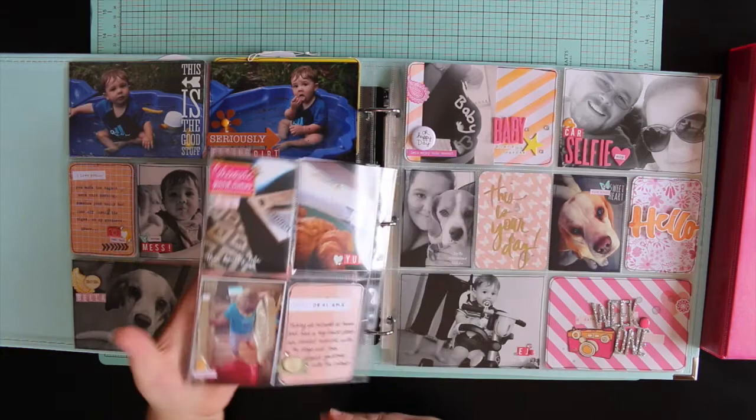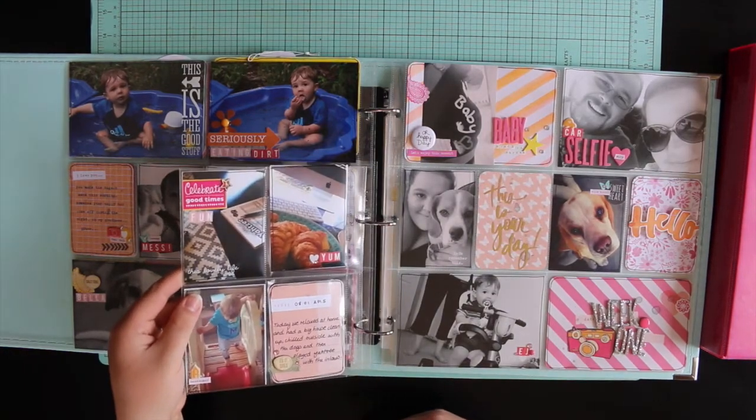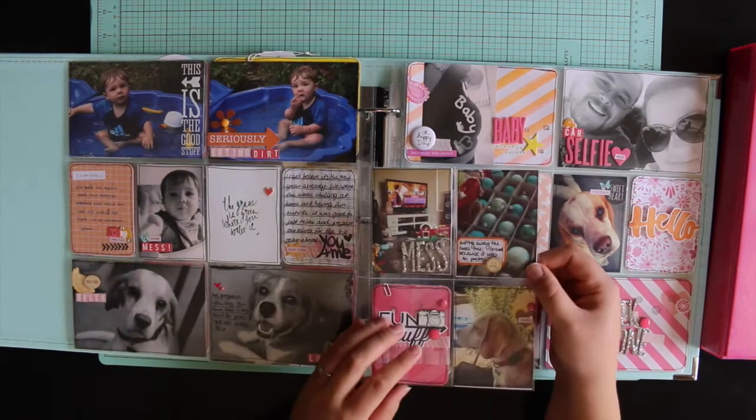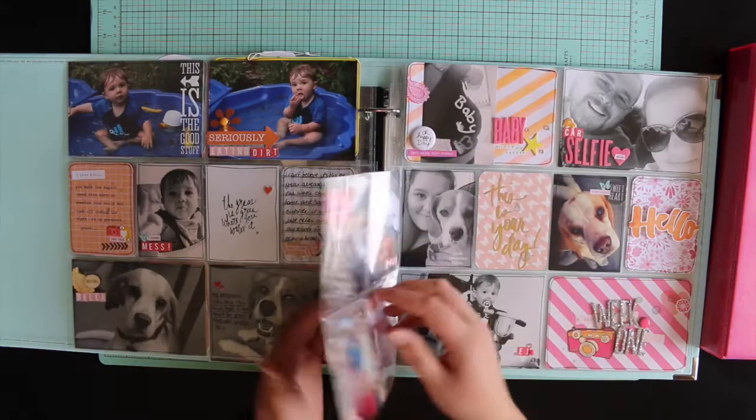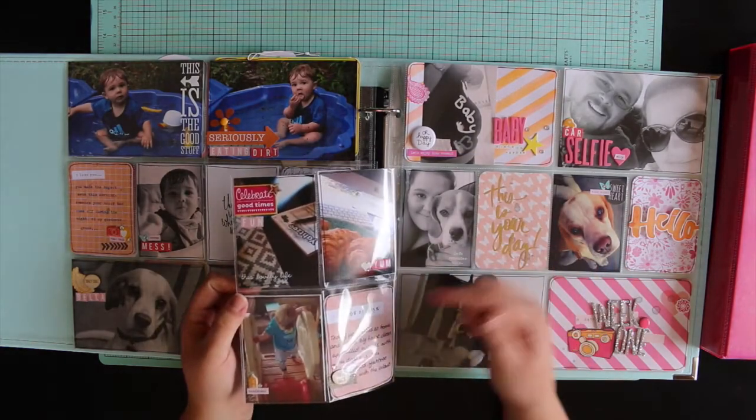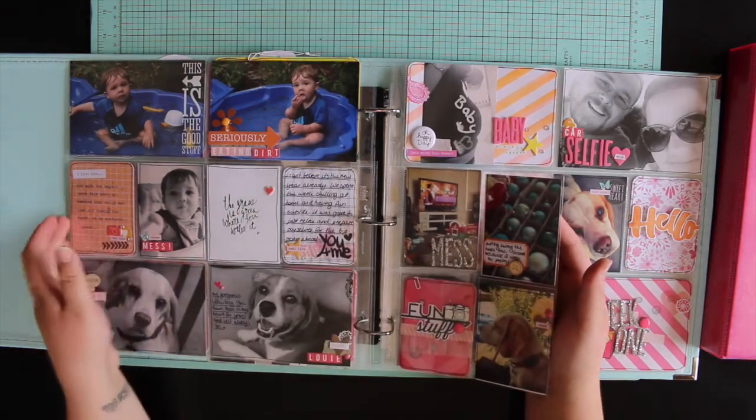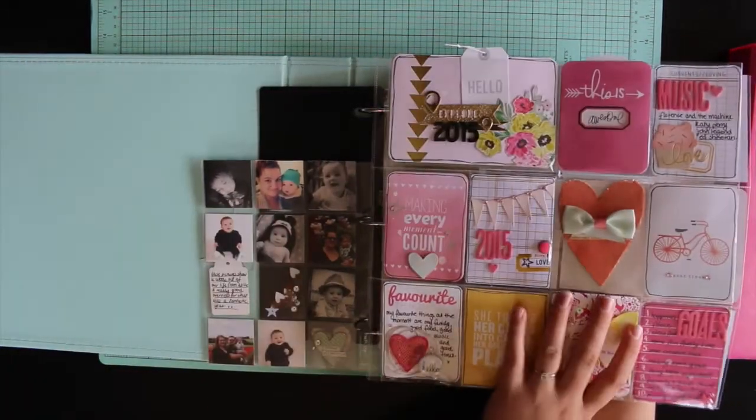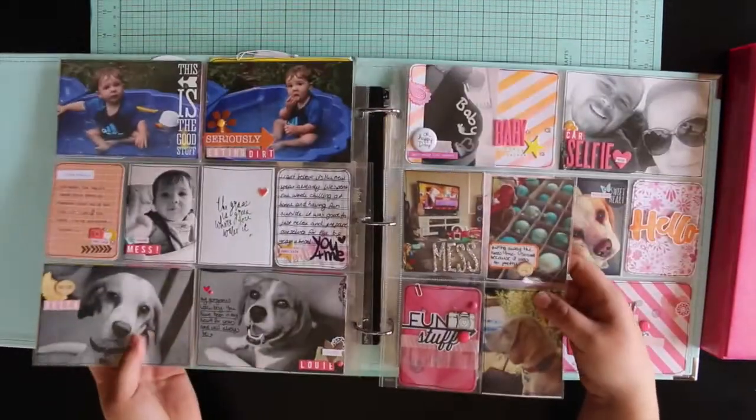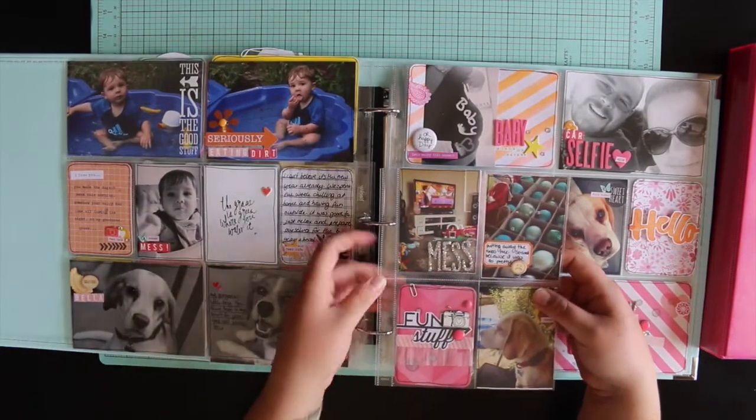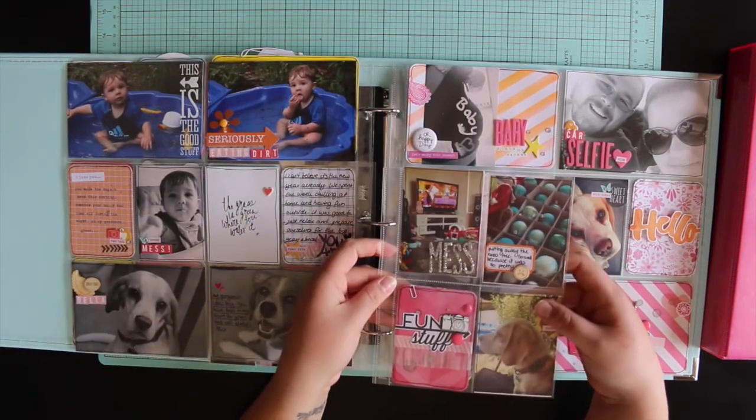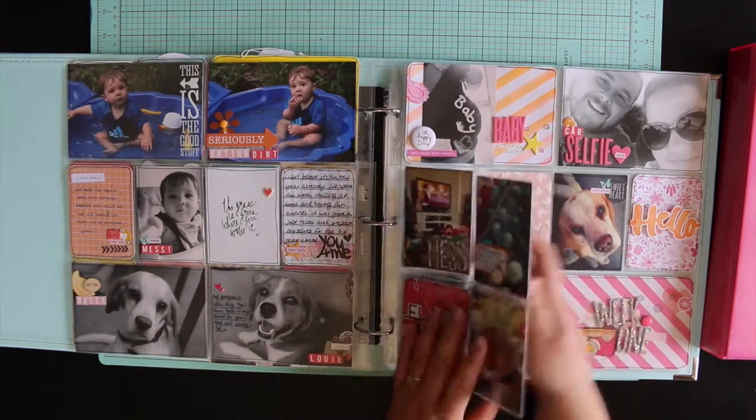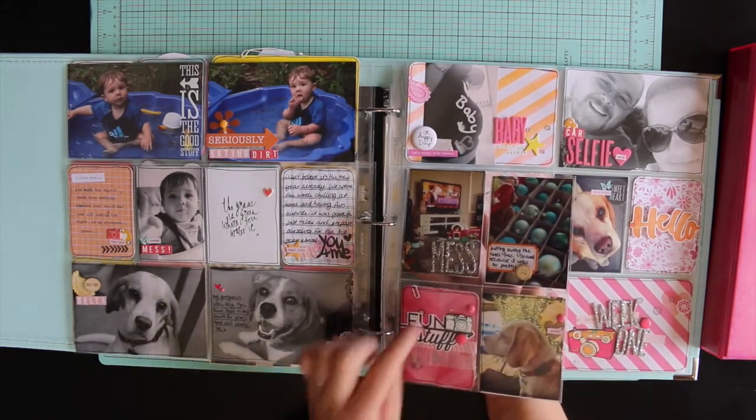So I did have quite a few photos. So I added this Simple Stories snap three by four pocket, which you can fit eight three by fours in. So that was very handy. The first one here is also a Simple Stories snap. So they do fit into these albums because the rings you just put in the bottom two or the top two if you want them at the top.